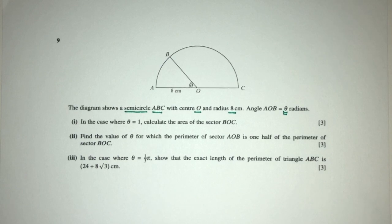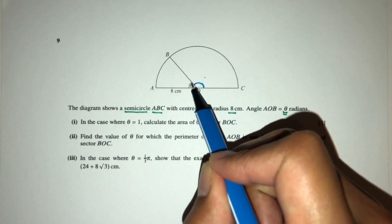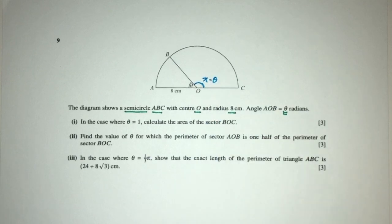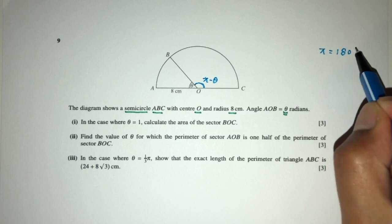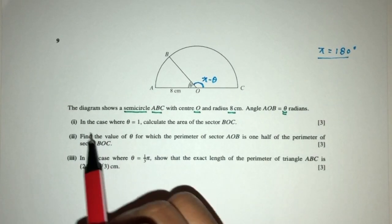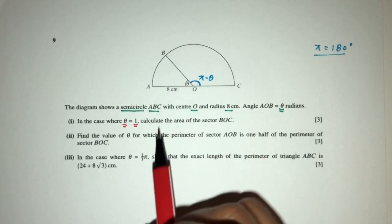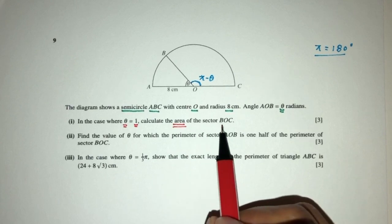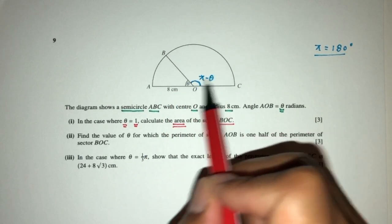Now, what can we derive? If this is theta, we understand this has to be pi minus theta. Pi is simply 180 degrees. Now let's move on. Part 1: in the case of theta equal to 1, we have to find the area of sector BOC, so we have to find the area of this sector.